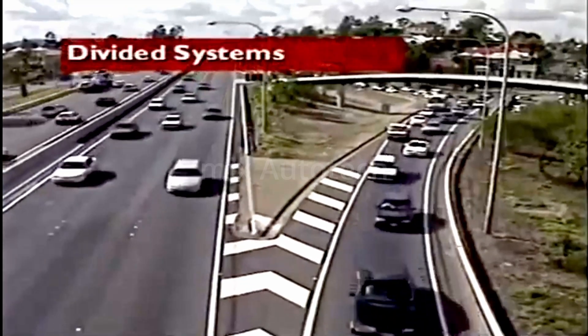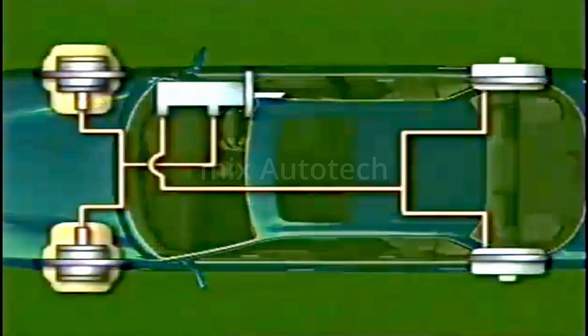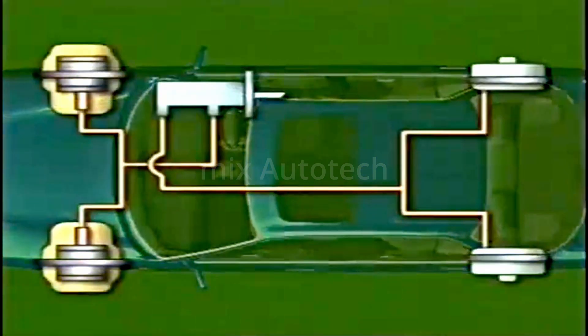This section examines divided systems for ABS. Modern cars use tandem master cylinders to suit divided or dual line braking systems. A divided system is safer in the event of partial failure.